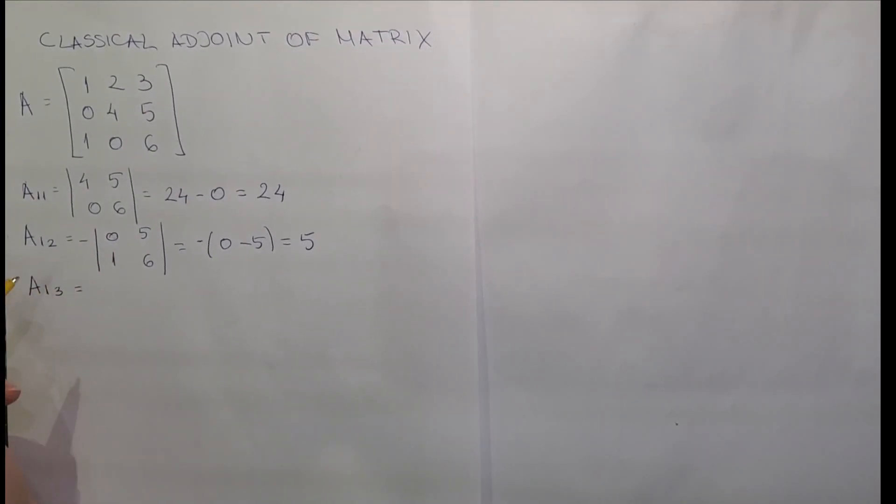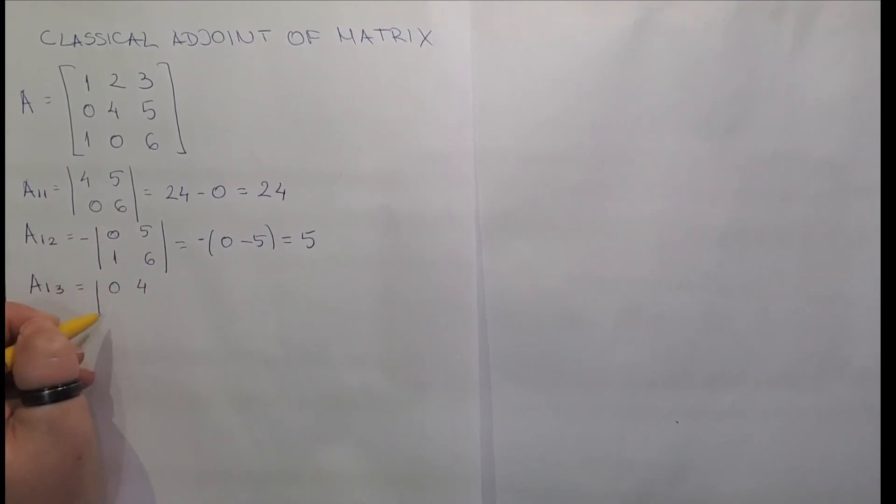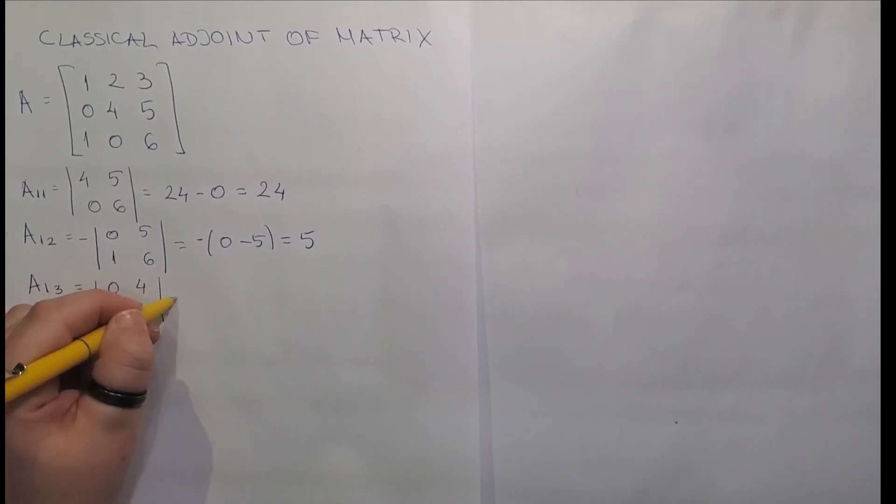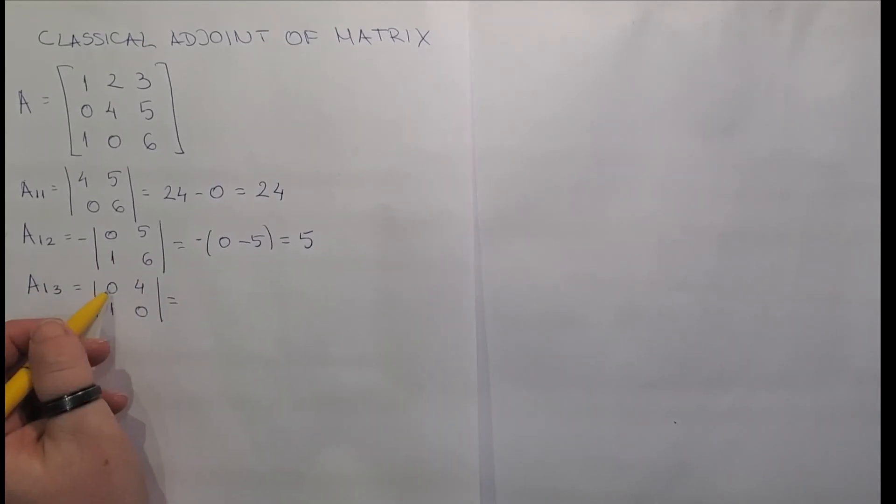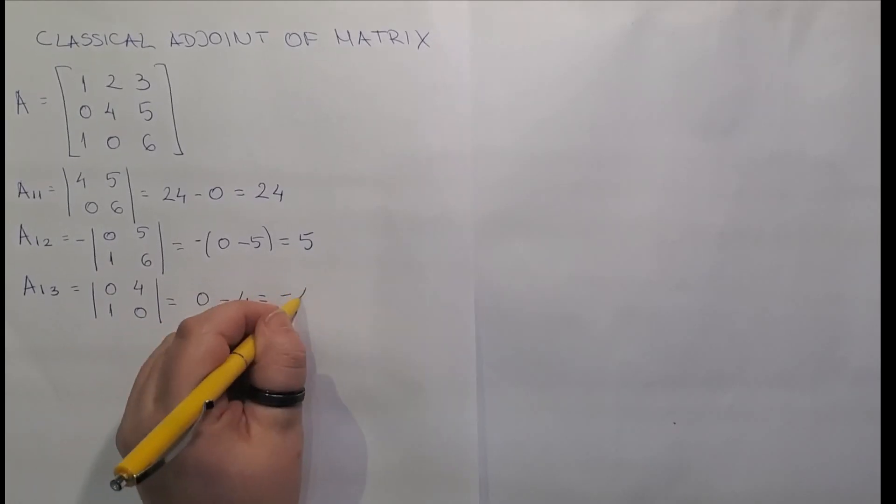For a13, we are eliminating row number 1 and column number 3. So we have left with 0, 4, 1, 0. To solve the determinant, we have 0 by 0 is 0, minus 4 equals to minus 4.